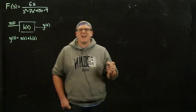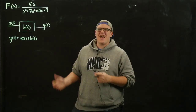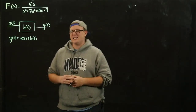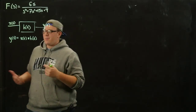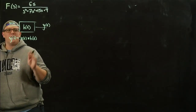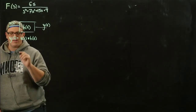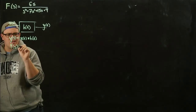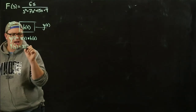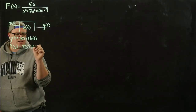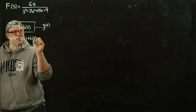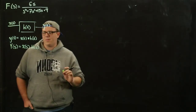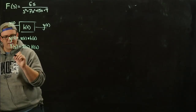But the problem is that the convolution integral is just not fun to do. It's sometimes difficult, and it's hard to conceptualize. So we use the Laplace transform, assuming initial conditions are zero — which is usually a totally fine assumption to make — giving us that y of s equals x of s times h of s.